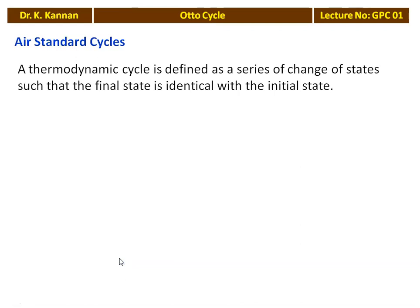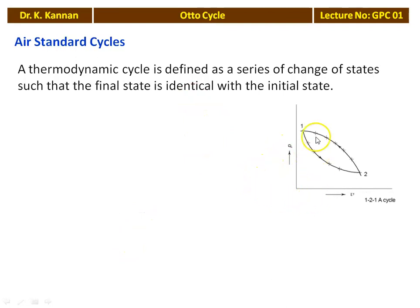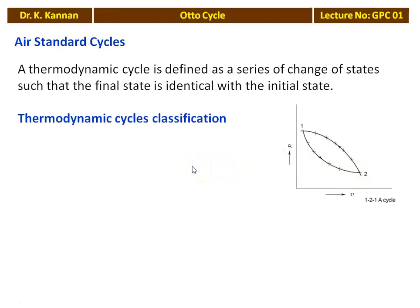Air Standard Cycle: a thermodynamic cycle is defined as a series of changes of state such that the final state is identical with the initial state. On a PV diagram, process 1 to 2 and process 2 to 1 constitute a cycle, where initial and final states are identical. When the working fluid is air, it is called an air standard cycle.